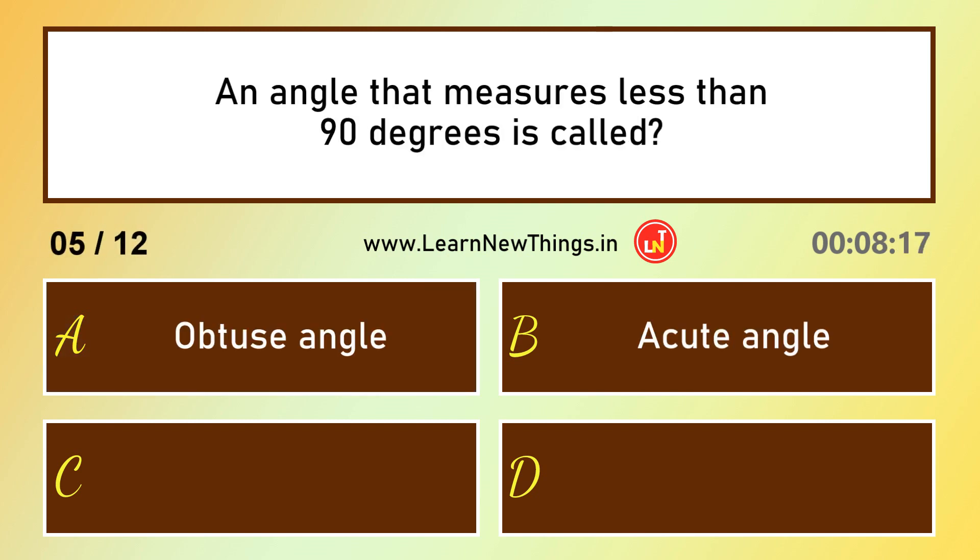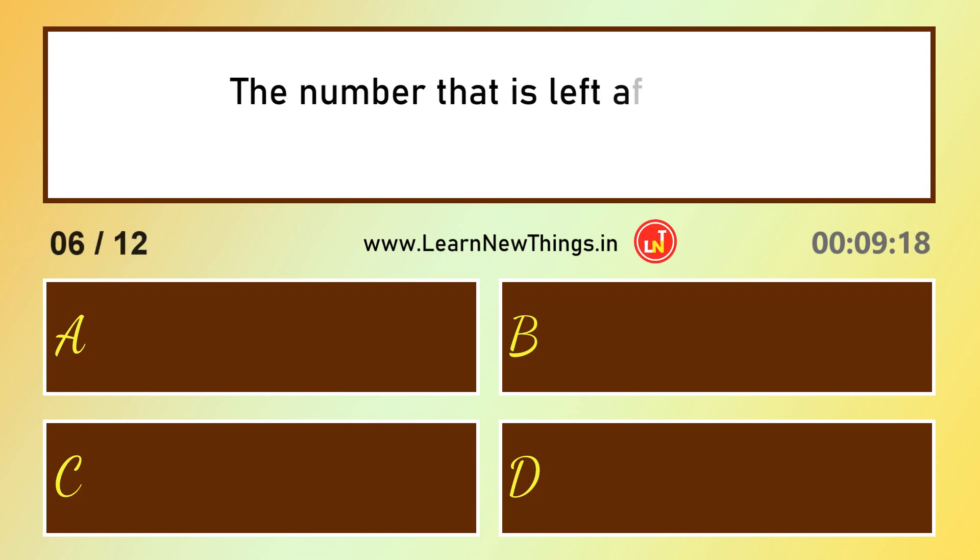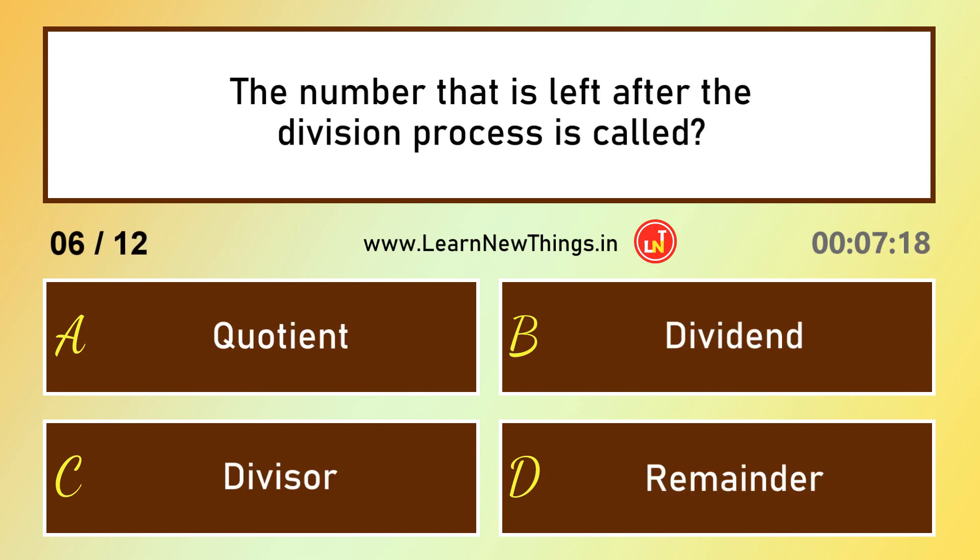An angle that measures less than 90 degrees is called Acute angle. The number that is left after the division process is called Remainder.